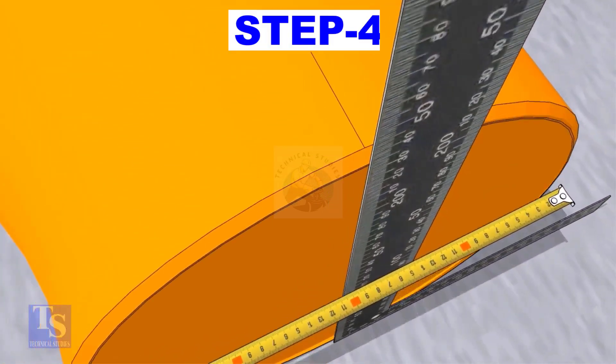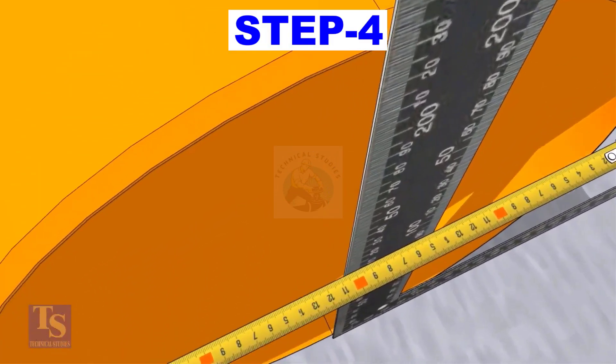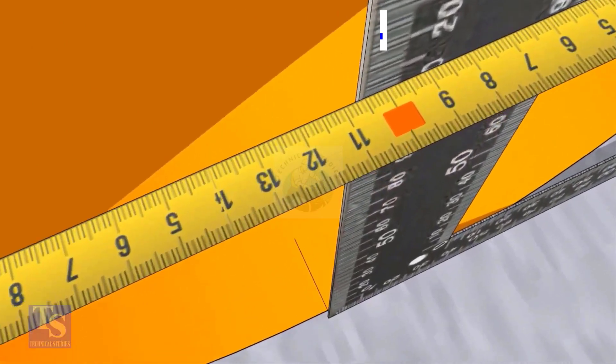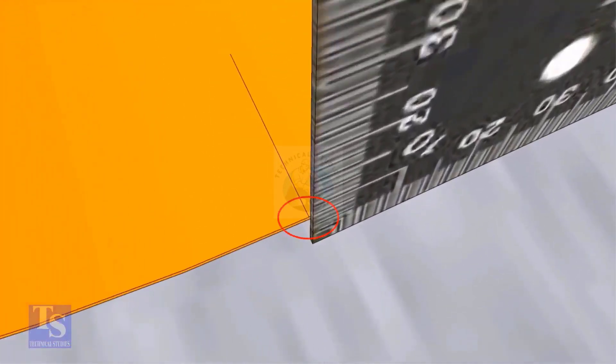Now, draw lines on the top and the bottom of the elbow where the right angle face touches. Transfer this line to the outer face later.